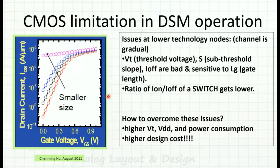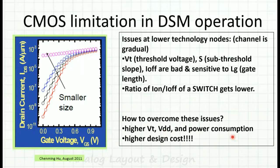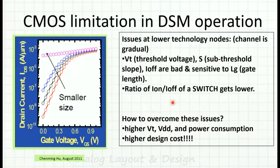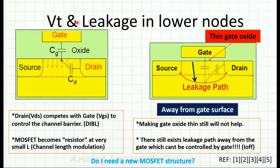To overcome this you could increase the threshold voltage, making the channel switch more suddenly. However, increasing threshold voltage means supply voltage must also increase, and power consumption increases too — a higher design cost. The very purpose of scaling is not served. Scaling means going down the technology node — from 1 micrometer to 0.18, to 0.13, to 90nm, 40nm, and so on.